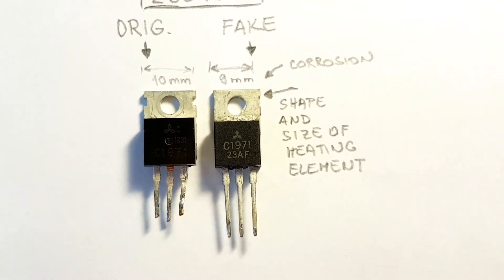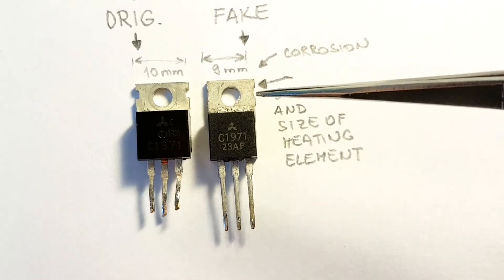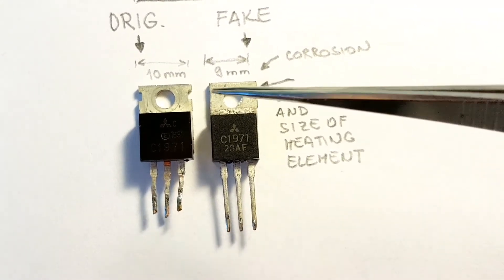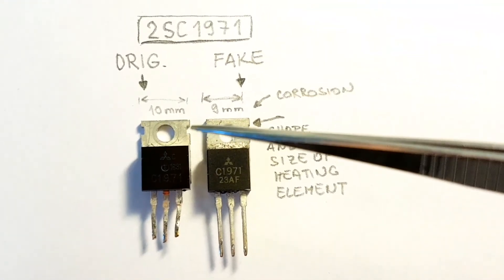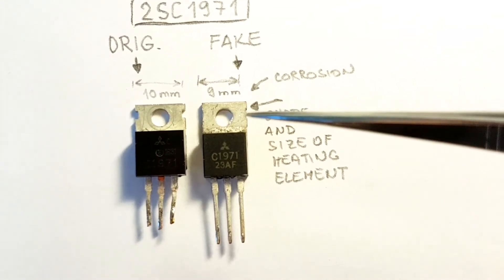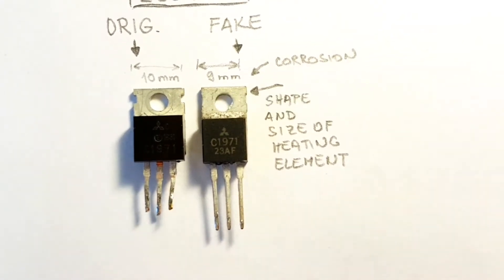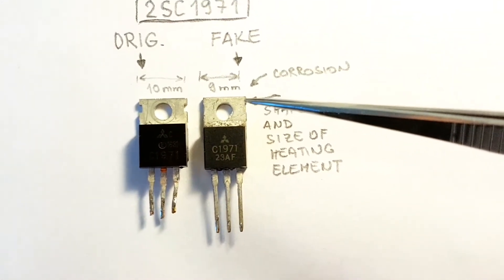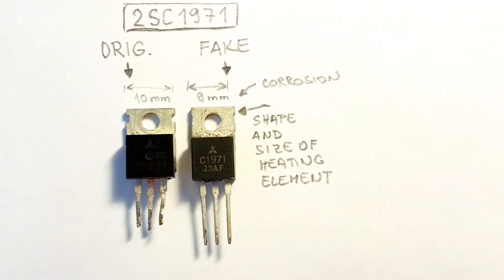As you can see, the shape of this element is very different. This little mark here or the hole on the heating element is very different. Here is almost nothing, here is quite visible. This little hole on the side of the element - here is no seeing sign of any hole.